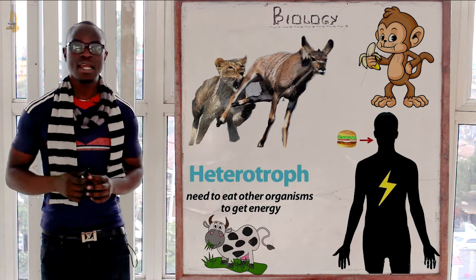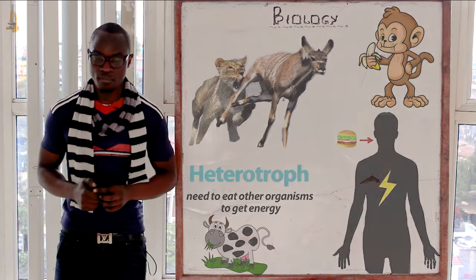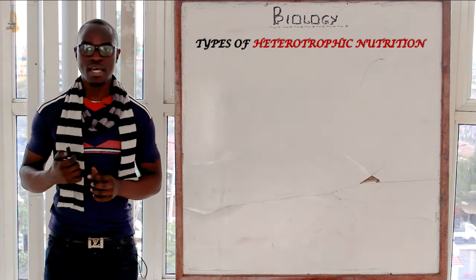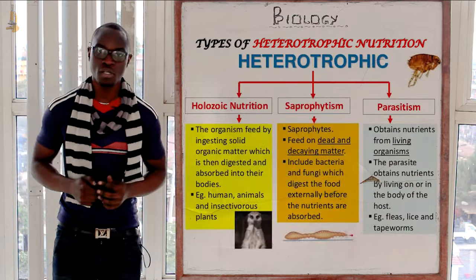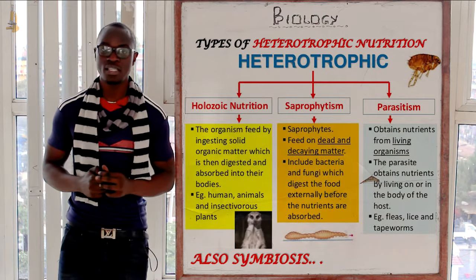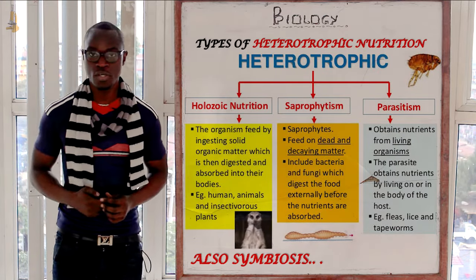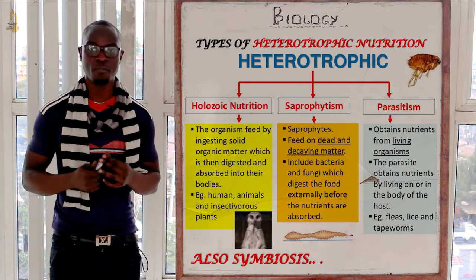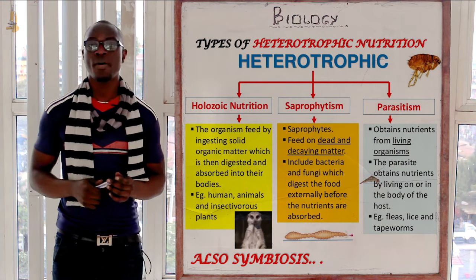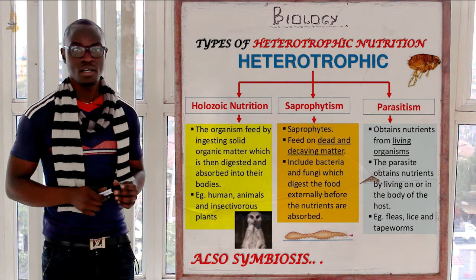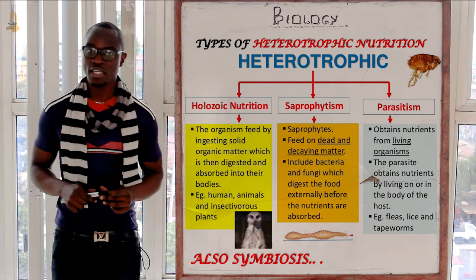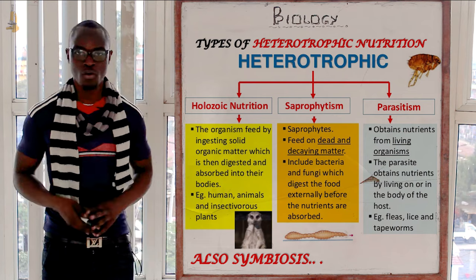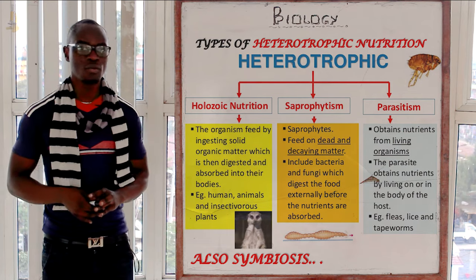In the next topic and subtopics, we are going to look at the types of heterotrophic nutrition, whereby we will see that we have holozoic, symbiosis, saprophytism, and parasitism. So let's meet in the next class as we expound more on nutrition.